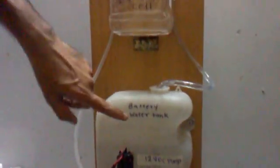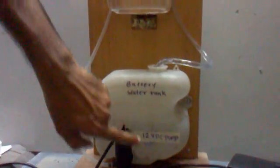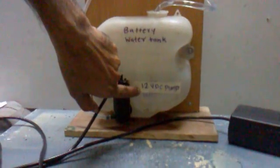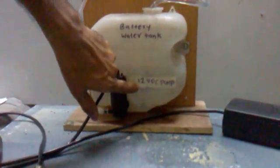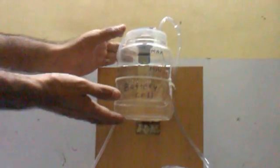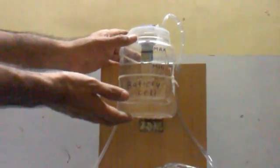This is our new battery watering system. This is battery water tank. It is connected with 12 volt DC pump. It will supply the water to the battery cell. This is our dummy battery cell, a prototype battery water cell.